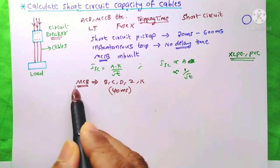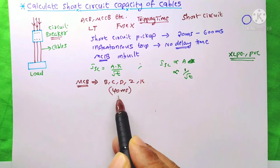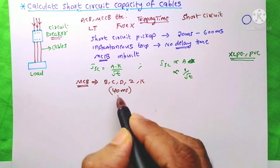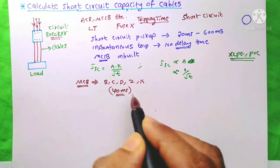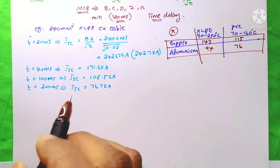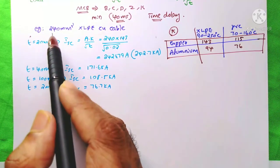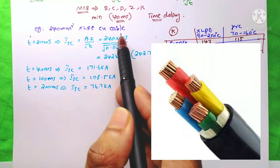But whatever the curves of an MCB, the minimum tripping time during short circuit fault is 40 ms. Here I am taking an example of 240 mm² XLPE copper cable.